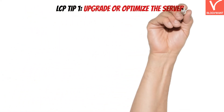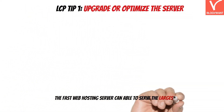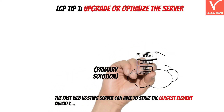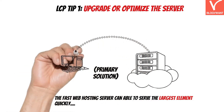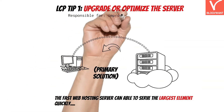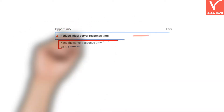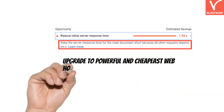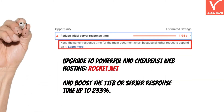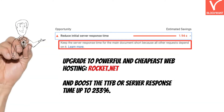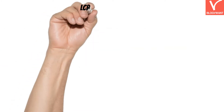LCP Tip 1: Upgrade or optimize the server. This is one of the primary solutions for improving the LCP time. By installing or upgrading to a powerful hosting server, the browser can parse the largest content from the server and render it quickly on the user's screen. By improving the server response time, up to 90% of LCP issues will be gone. When we talk about the fastest and cheapest hosting server, nobody can beat Rocket.net.